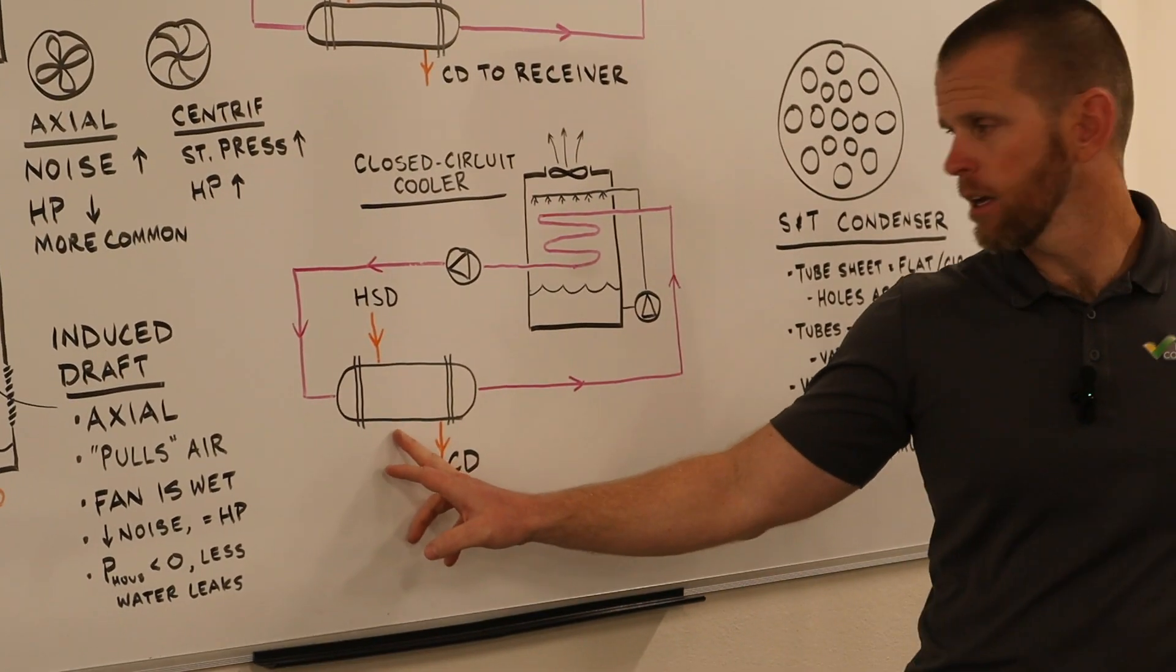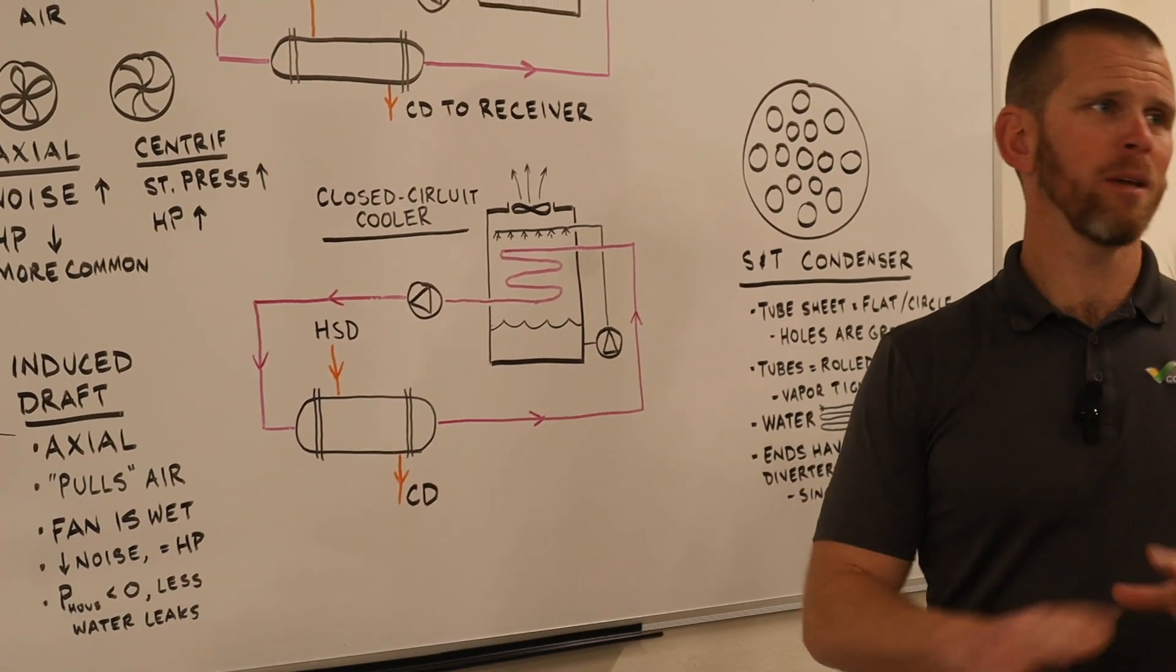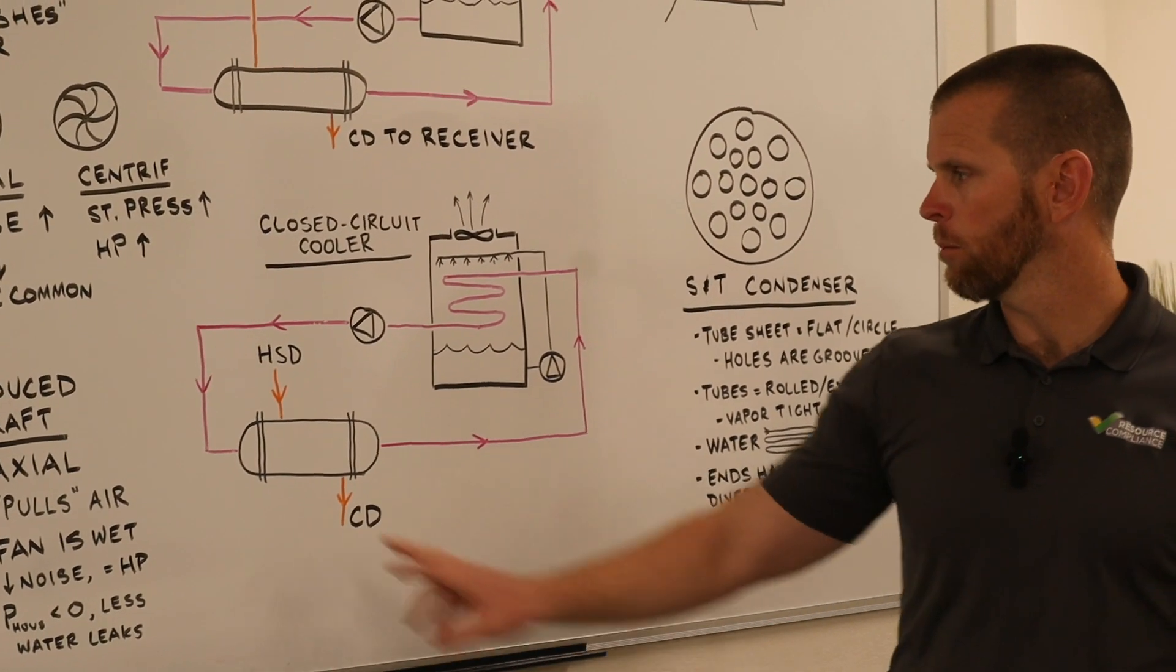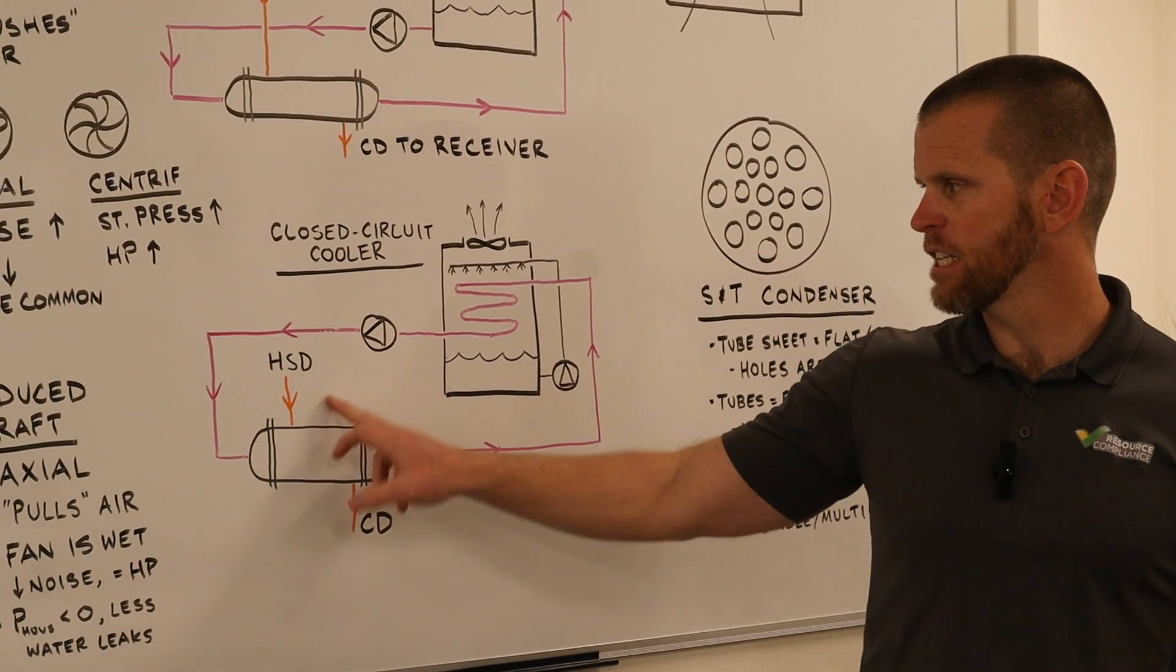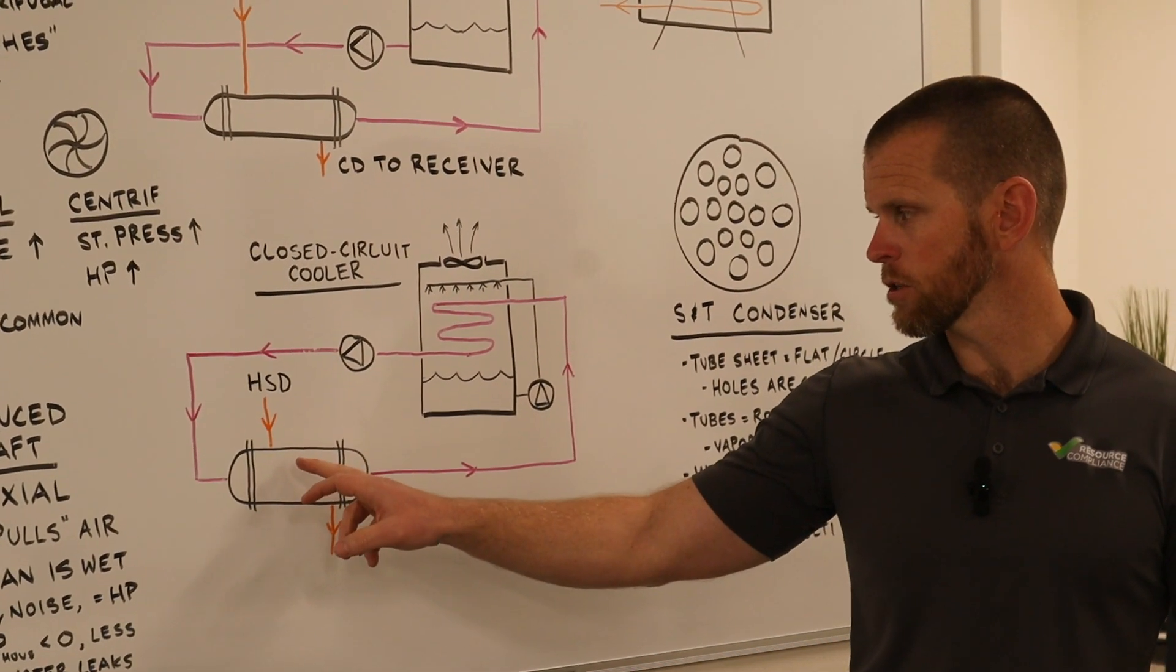We'll have a heat exchanger. It could be a shell and tube like I've drawn here, or it could be a plate and frame. We have our discharge, our high-stage discharge coming from our compressors going into the heat exchanger.